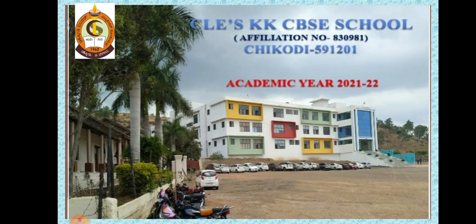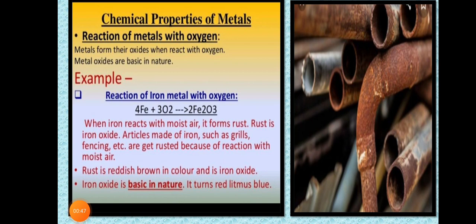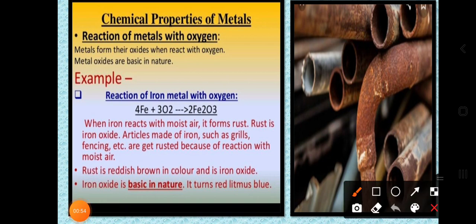Now let us discuss one by one how metals react with the environment. The first chemical property I am going to discuss is the reaction of metals with oxygen. To understand this reaction, we have a simple example — rusted iron.